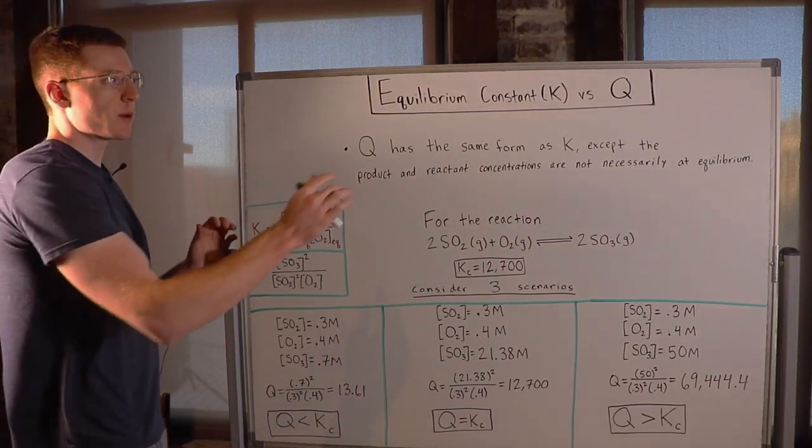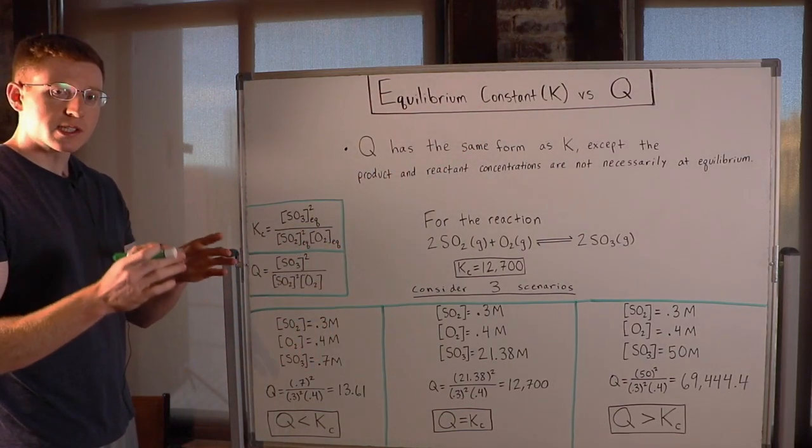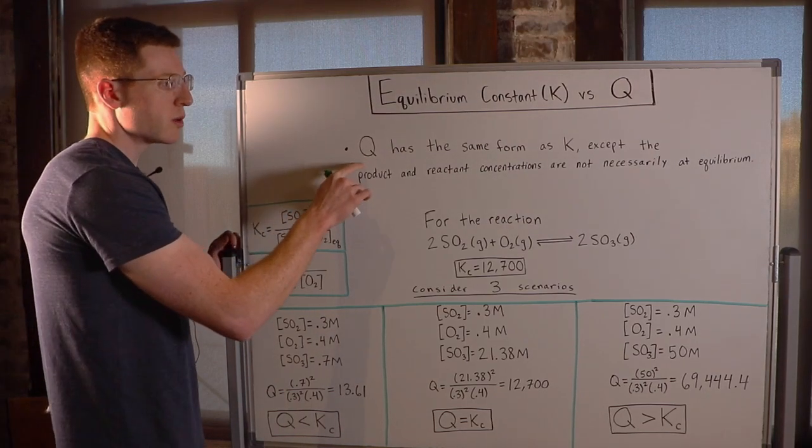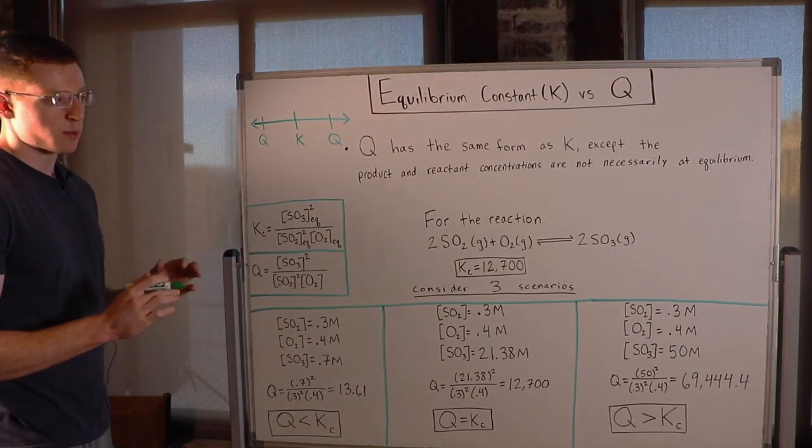Remember with the equilibrium constant, the product and reactant concentrations had to be precisely at their equilibrium values, but with Q, that's not a requirement. So let's look at an example here so that this becomes more clear.